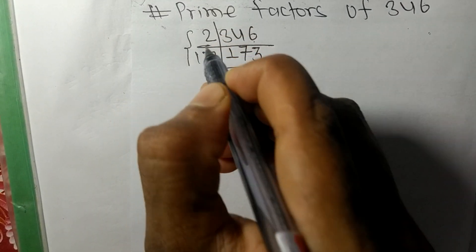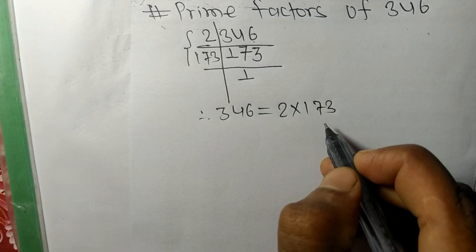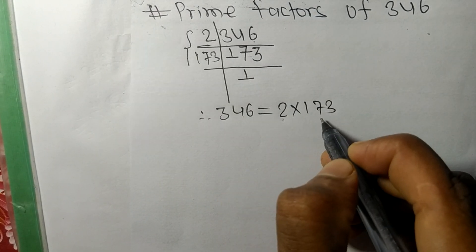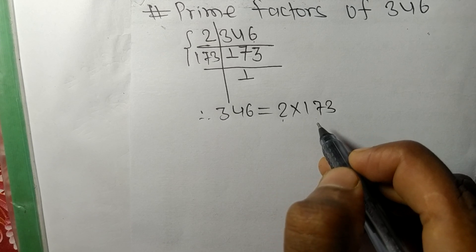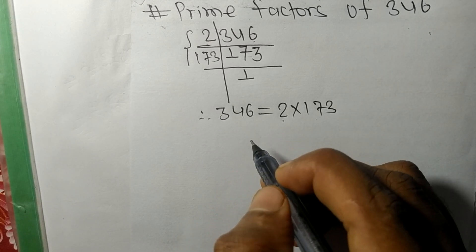Therefore 346 is equal to, from this side, 2 times 173. So 2 and 173 are the prime factors of 346.